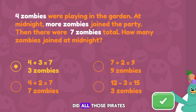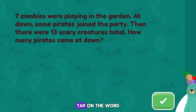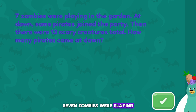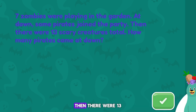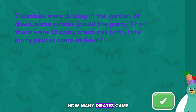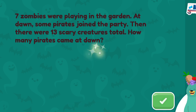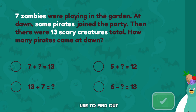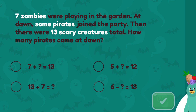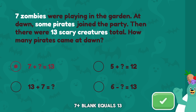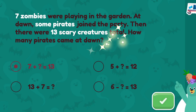But where did all those pirates come from? Tap on the word problem to hear it read aloud. Seven zombies were playing in the garden. At dawn, some pirates joined the party. Then there were thirteen scary creatures total. How many pirates came at dawn? Let's solve this word problem. Which equation can we use? Seven plus blank equals thirteen.